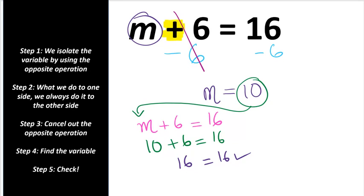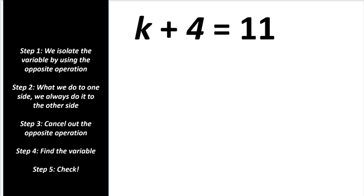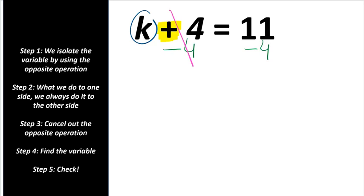Let's do another example. We have k plus 4 equals 11. We're adding 4, and the opposite of addition is subtraction, so we're going to subtract 4. What we do to one side, we must do to the other side. Plus 4 minus 4 is 0, so cross it off — we're left with k equals 11 minus 4, which is 7.